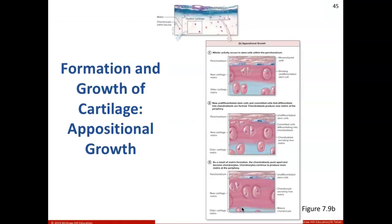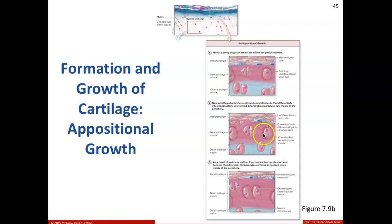Here's our new matrix around our chondrocytes, and our cartilage has grown in length. Now let's take a look at appositional growth, which is going to allow for the cartilage to grow in width. We have mitotic activity that's going to occur in the stem cells within our perichondrium. You can see in the perichondrium we've got some of these special mesenchymal cells that can become anything that they want, and some of them decide that they want to become chondroblasts. Before they do that, they become an undifferentiated stem cell, and then these new undifferentiated stem cells are going to become committed cells that start to differentiate into chondroblasts.